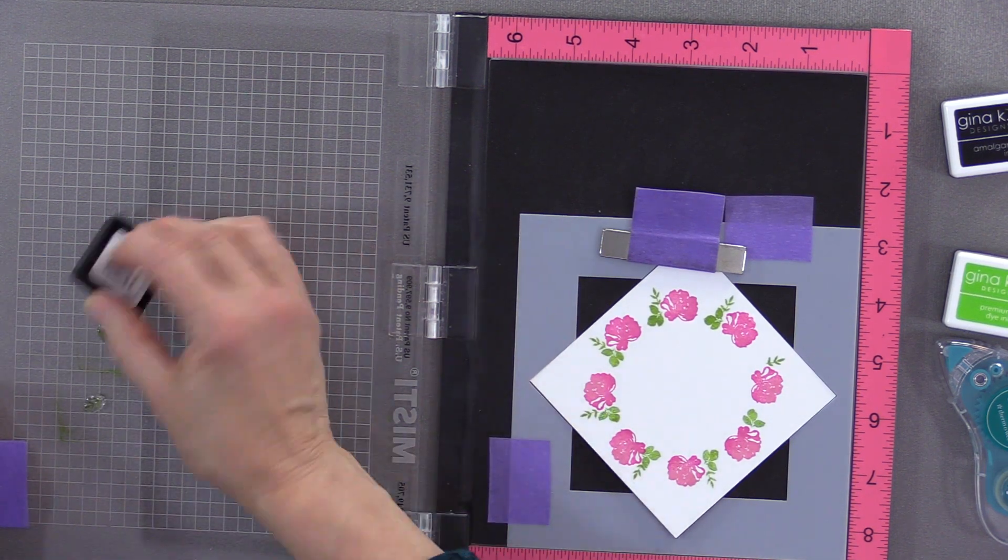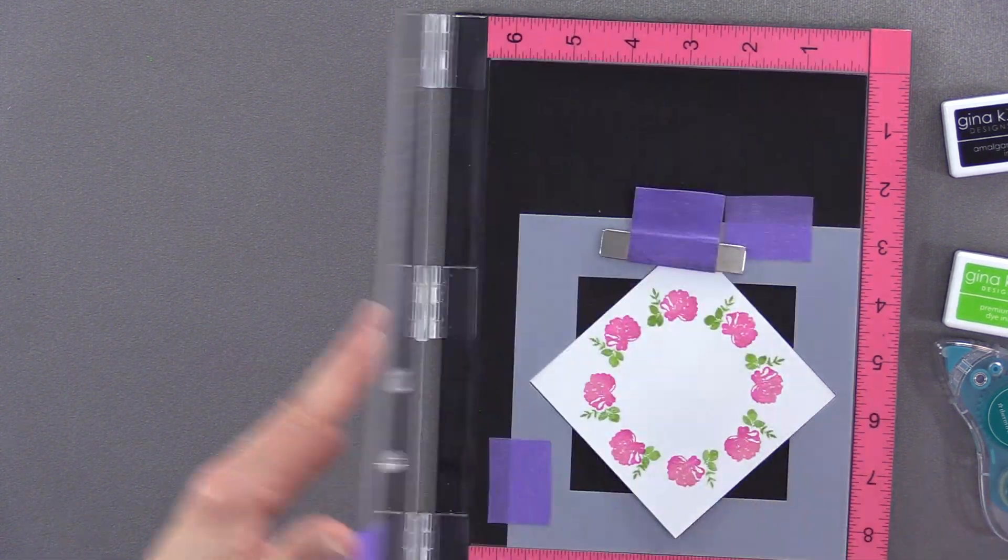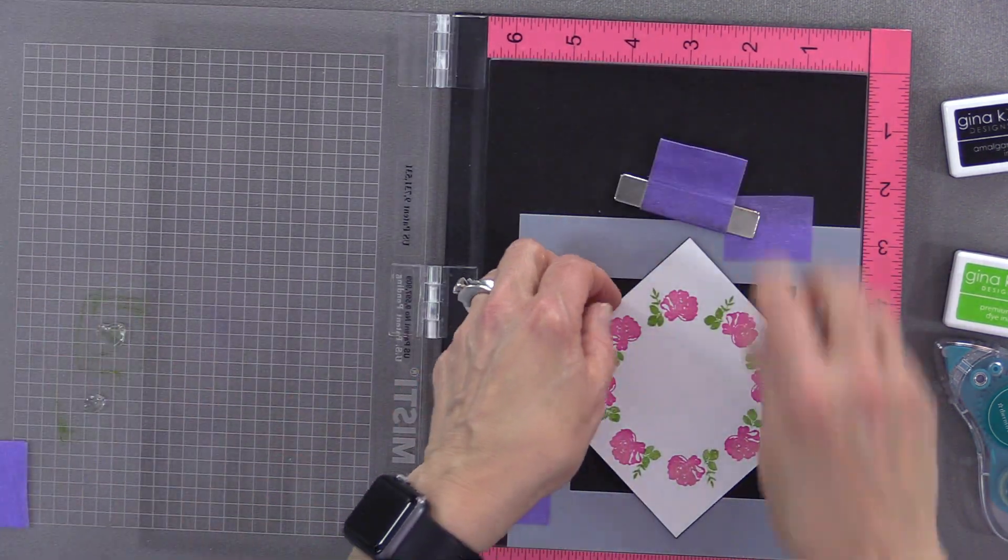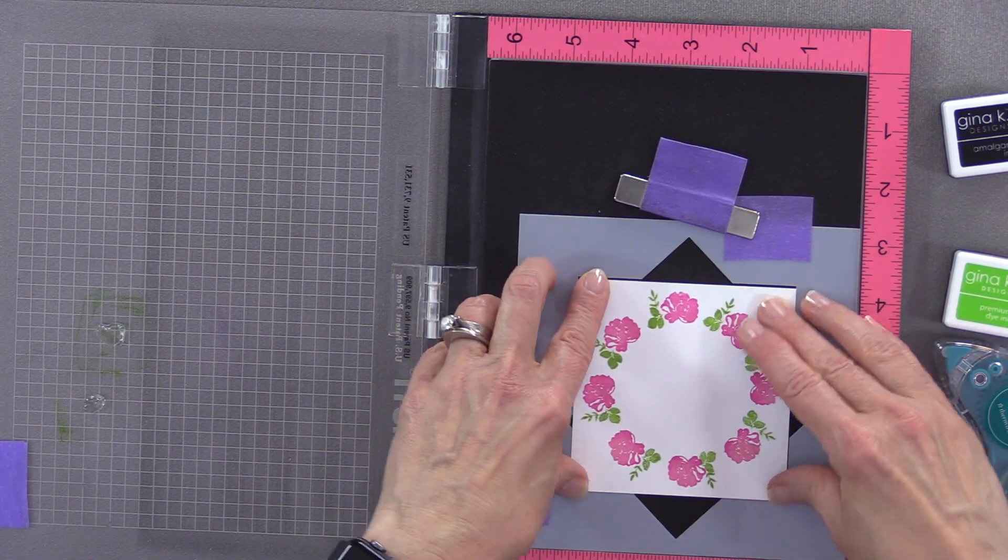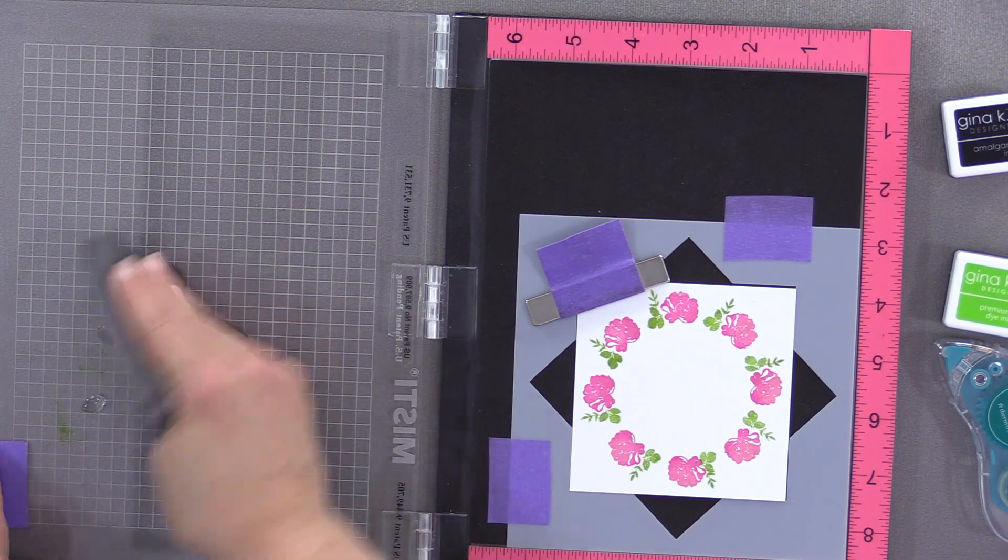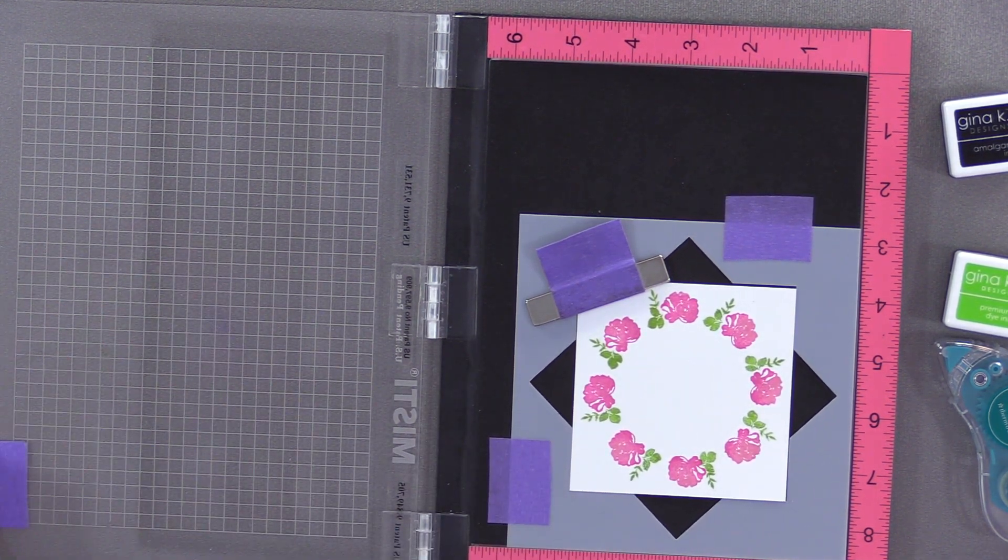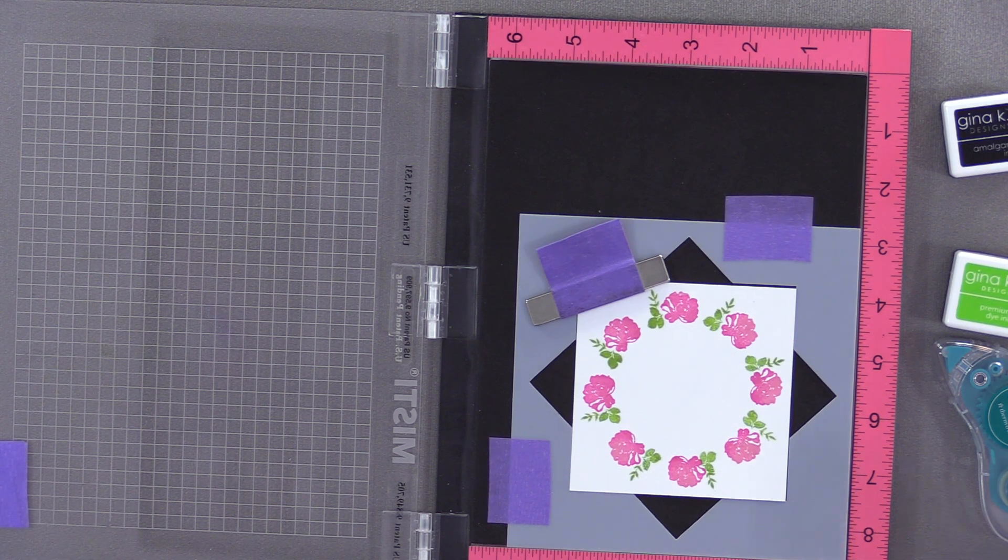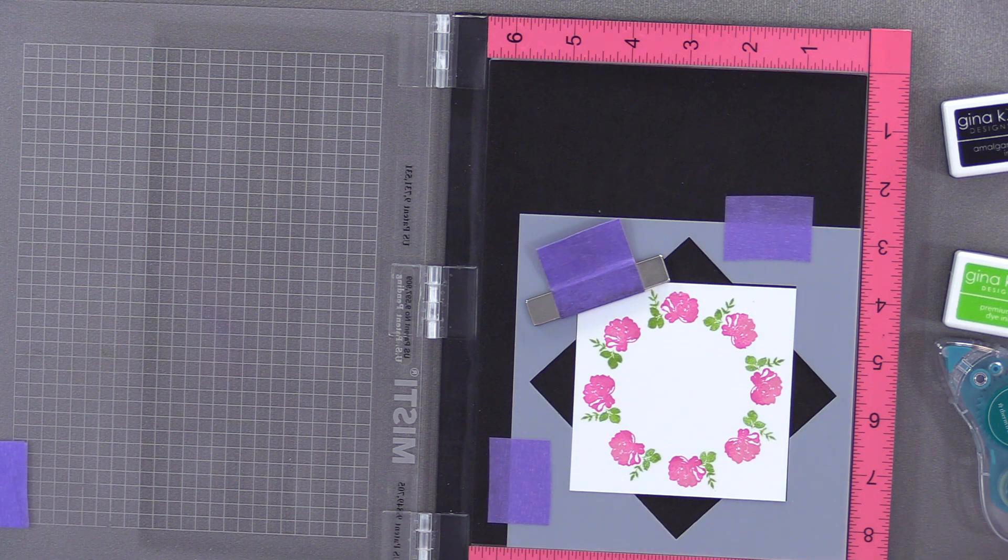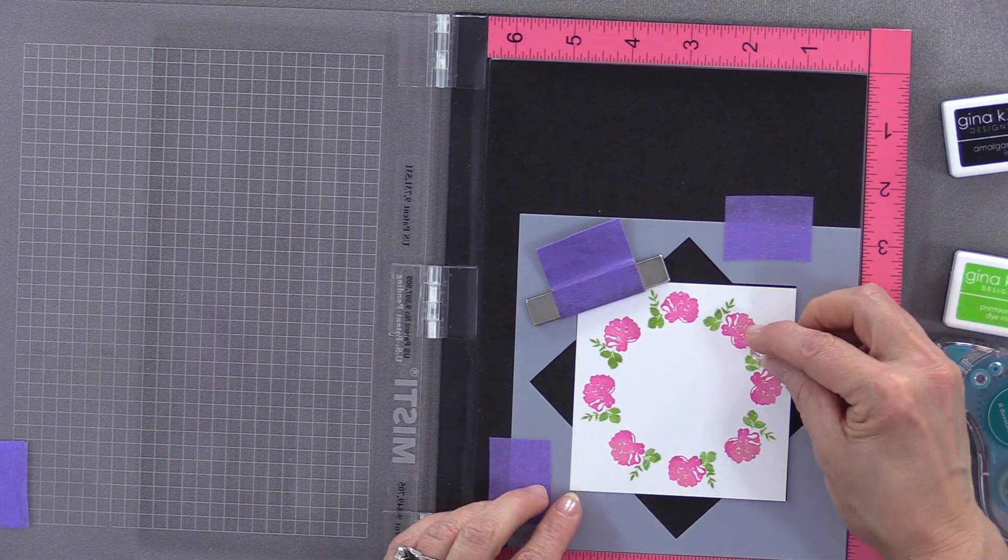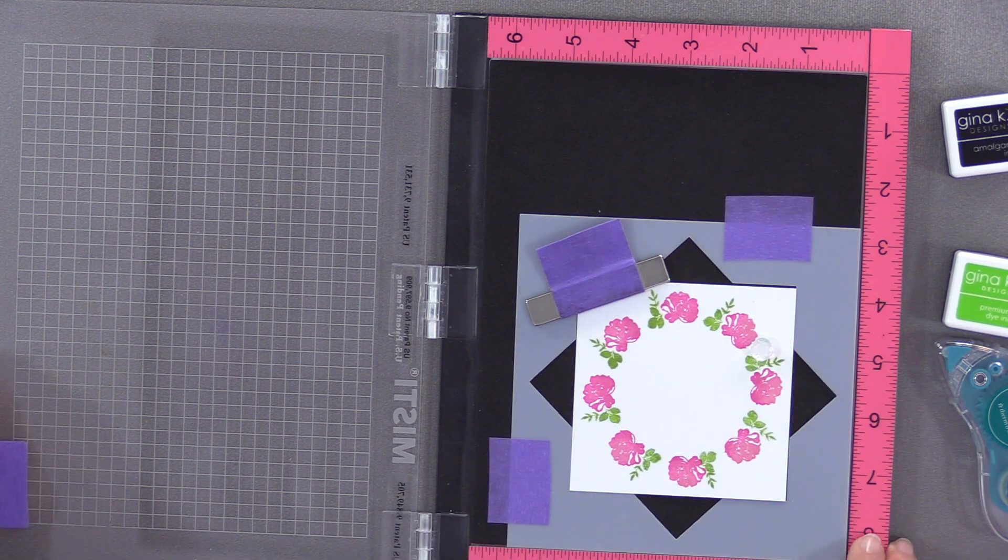I'm getting ready to stamp my last one, and that should complete everything. Just make sure you have all of both leafy images going all the way around. That worked out really well. Now it looks like I have space for one more stamp, so I am going to use this little flower here from the Pinkfresh Studio stamp and place that right in between there to just fill that in.